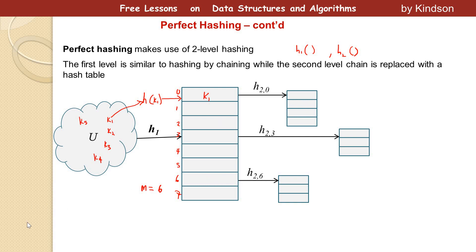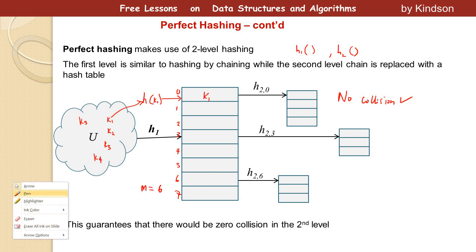This is how it works. The thing is that no collision will occur. That is the claim in the second level. This guarantees that there will be zero collision in the second level.